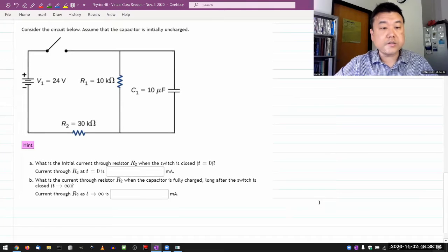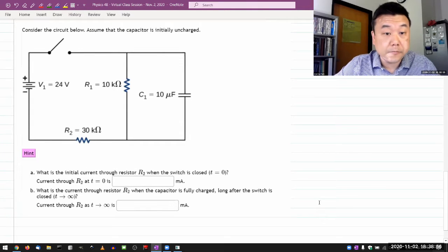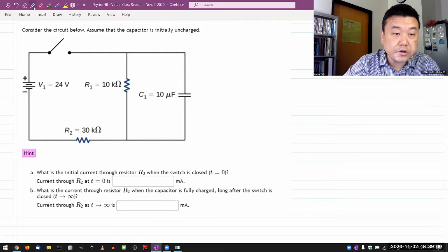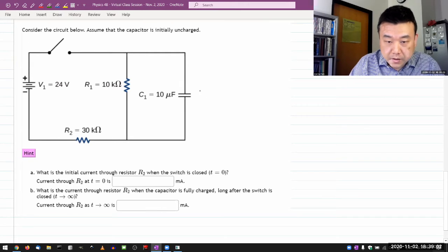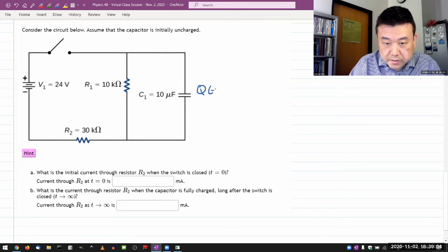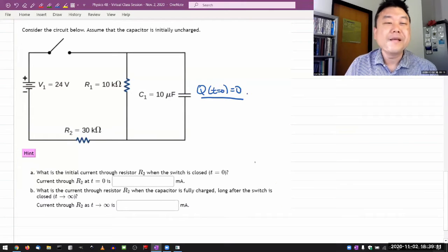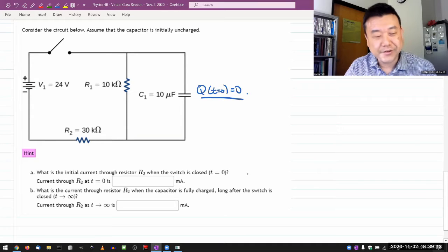So, this is a question. It says, consider the circuit below and assume the capacitor is initially uncharged. Good to know. Let me write it down. Q at t equals zero is zero. That's the common assumption because it's realistic. So, capacitor is initially uncharged.